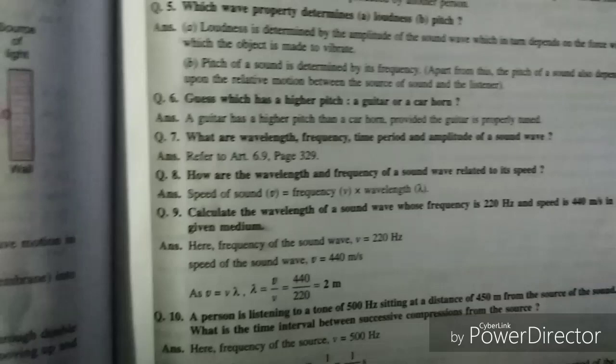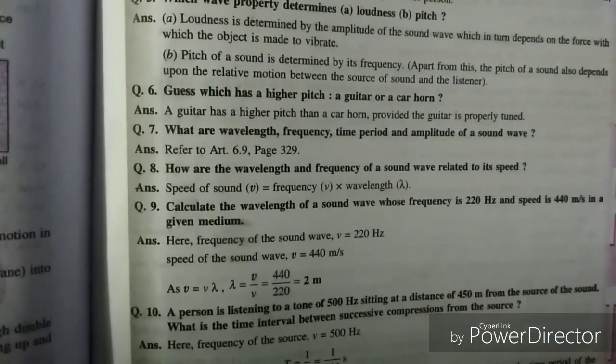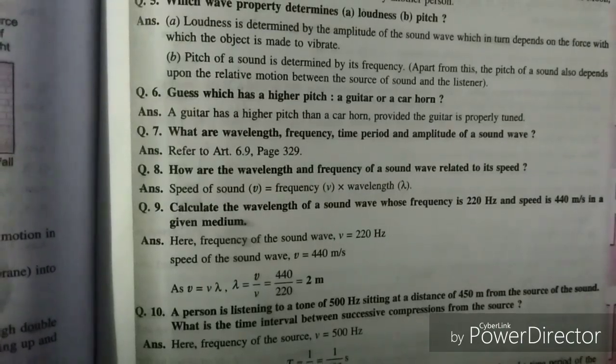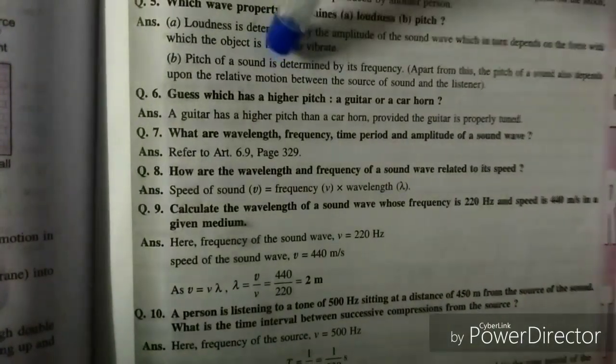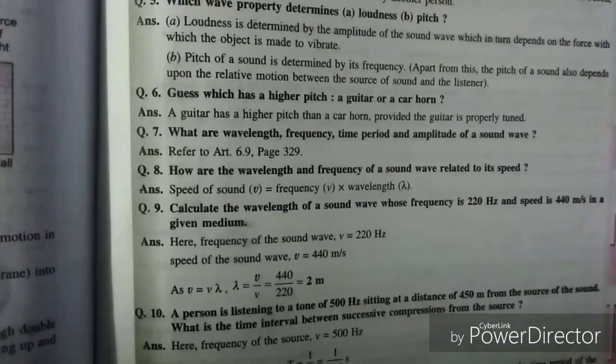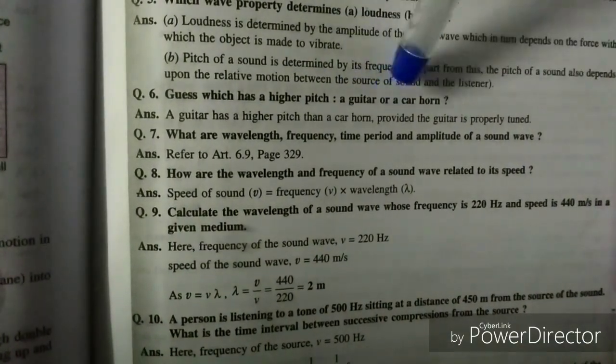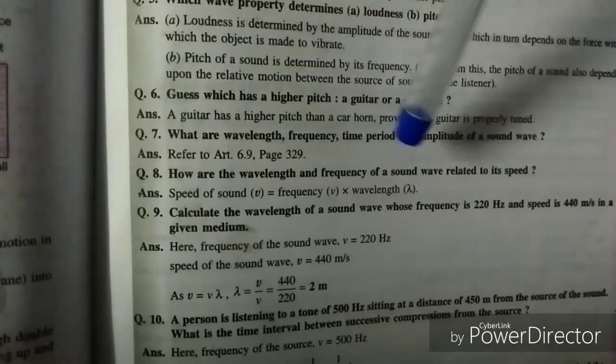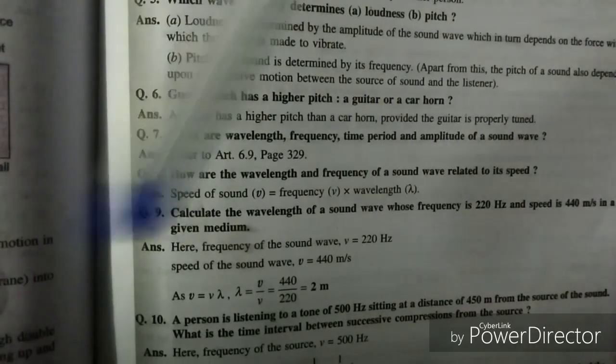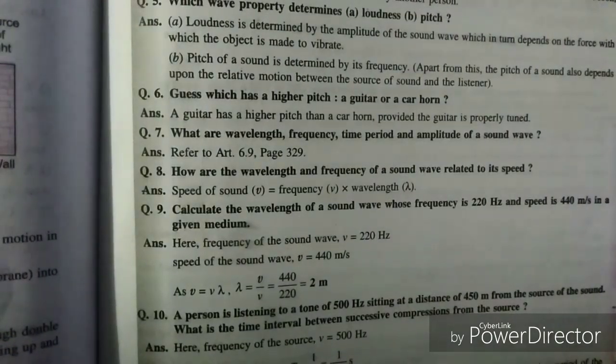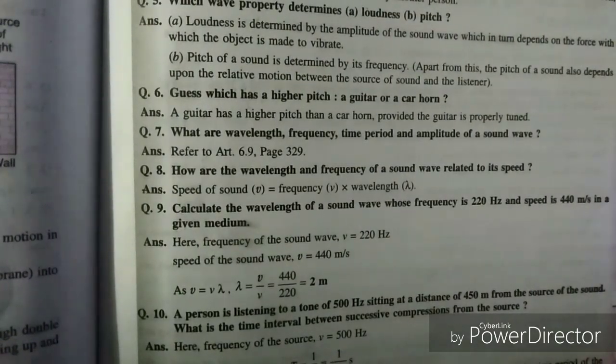Calculate the wavelength of a sound wave whose frequency is 220 hertz and speed is 440 meter per second in a given medium. Speed of sound is equal to frequency into wavelength. So frequency we are given 220 hertz, speed is 440 meter per second. So wavelength would be equal to speed upon frequency. So 2 meter.